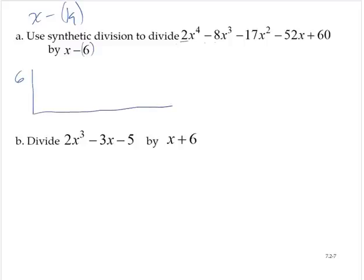we place that k value outside of a structure. Then we just take the coefficients of the polynomial of the dividend, the numerator. So 2, negative 8, negative 17, negative 52, and 60.